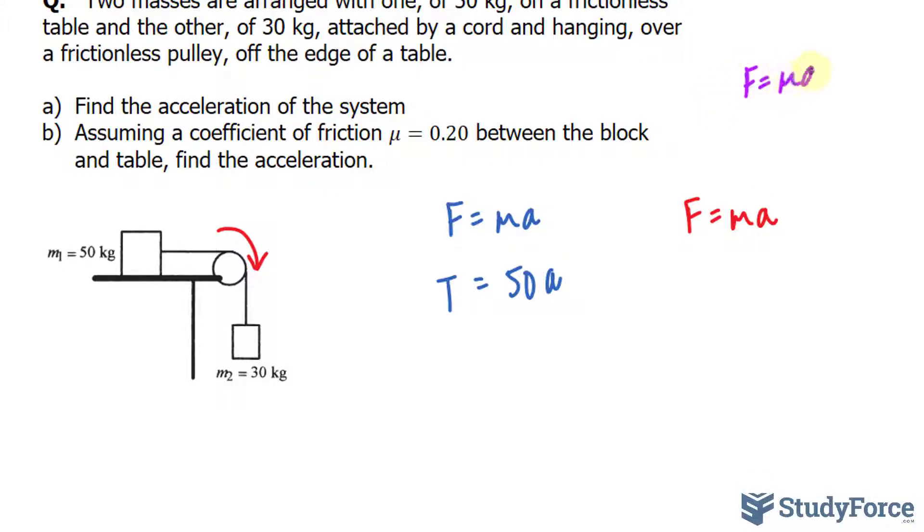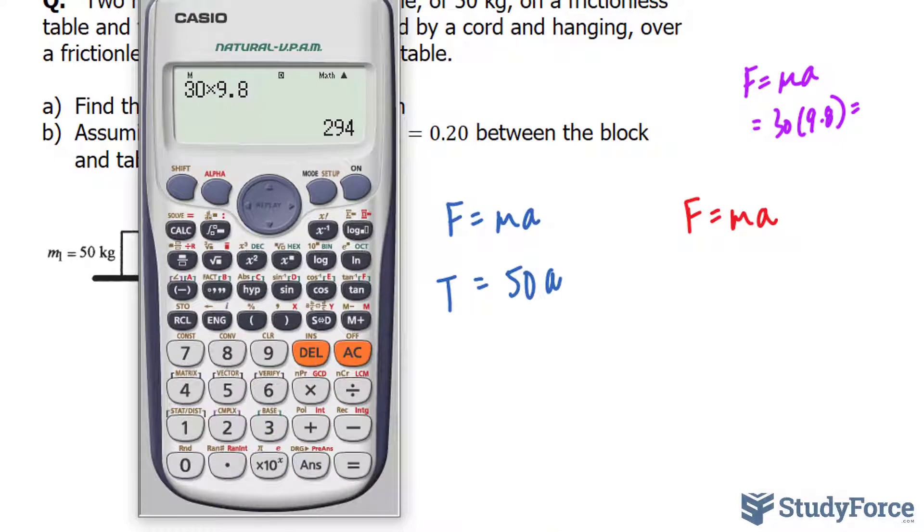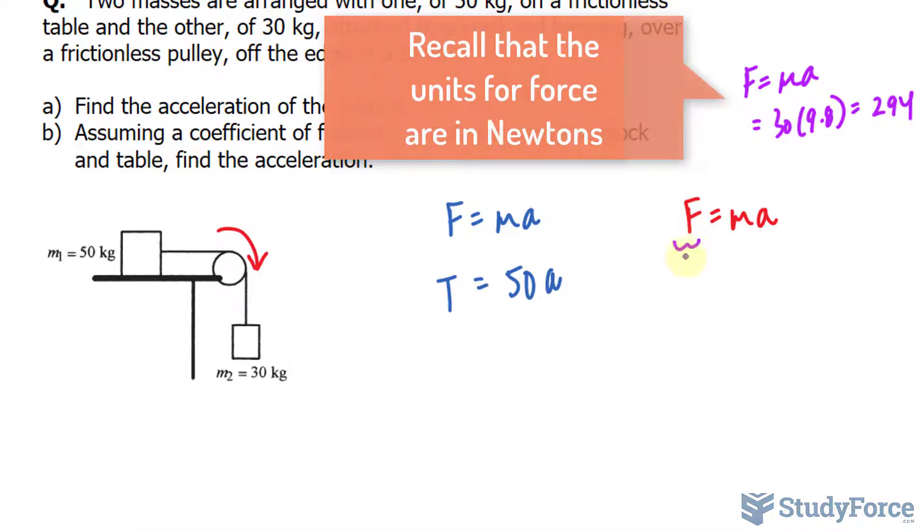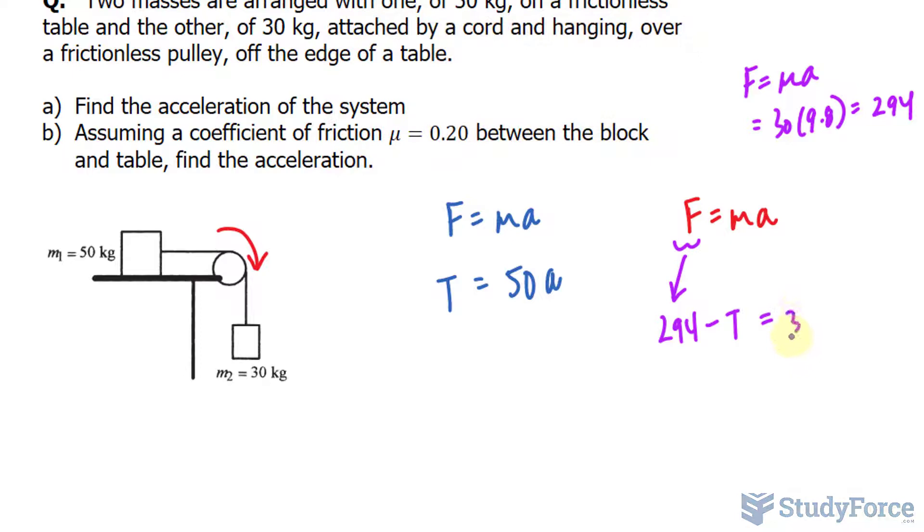Let's do a calculation on the side. We have F equals mA, the mass is 30, and the acceleration due to gravity is 9.8. So if we multiply these two numbers out, we end up with 294. So as I said, I will be replacing this with 294 minus the tension equals the mass of 30 and the shared acceleration in the system.